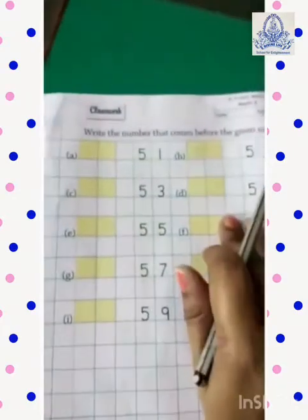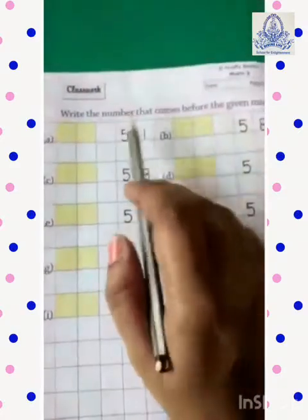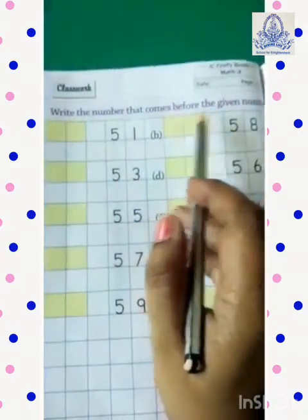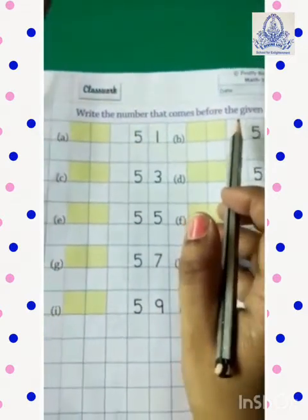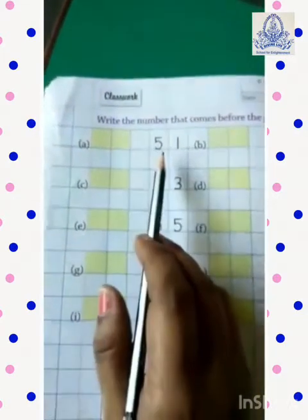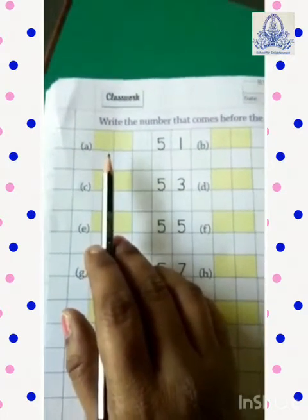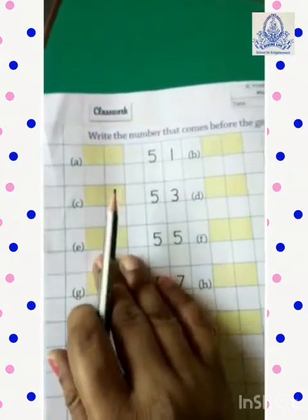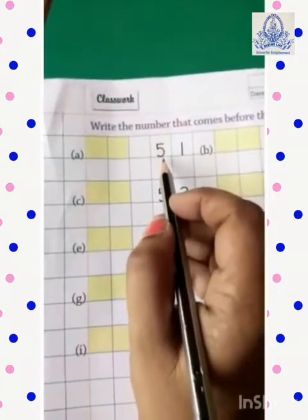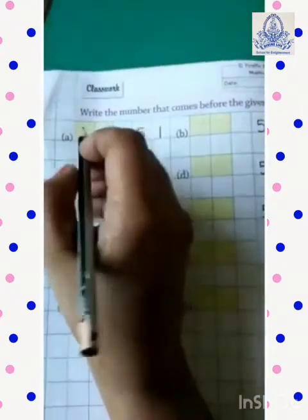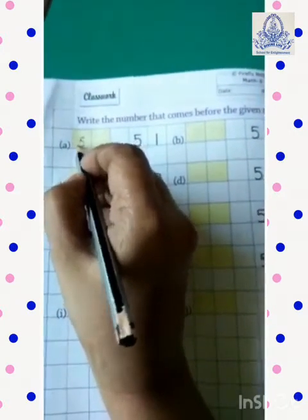Okay. Now turn the page. Take out page number 53. What we have to do? Write the numbers that come before the given numbers. अब यहाँ पे हम लोगों को before numbers लिखने हैं — जो भी given number है, उसके पहले कौन सा number आता है, वो लिखना है. Chalo, let's start. What comes before 51? 51 के पहले क्या आता है? Yes. It's 50, 50.